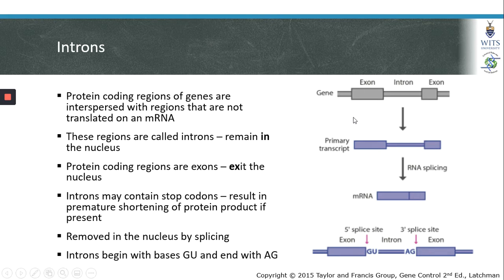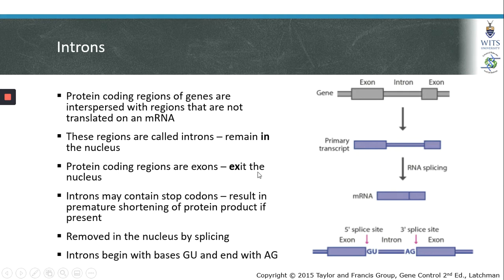When genes are first transcribed into the primary mRNA transcript, genes contain regions that code for proteins as well as regions that are not translated from the mRNA. Regions that do not code for proteins are called introns — they remain in the nucleus, hence the name intron. Protein coding regions of mRNAs that will exit the nucleus are called exons.